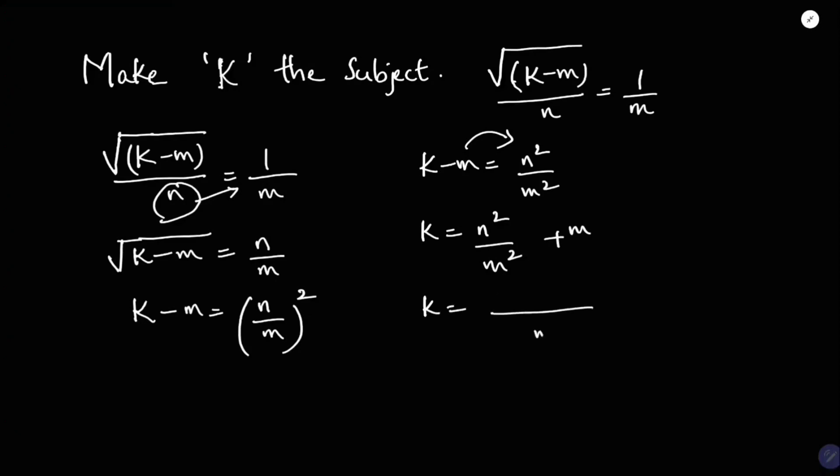if we will take LCM m square, so here n square plus m square into m means m cube. So the final answer is k equals n square plus m cube by m square.